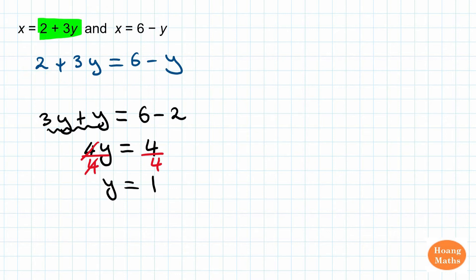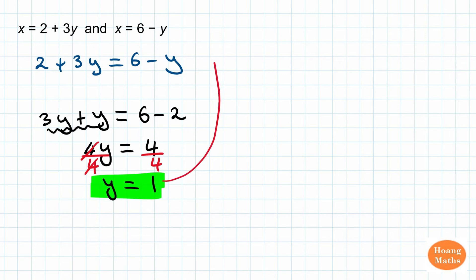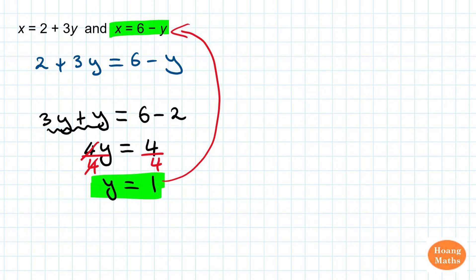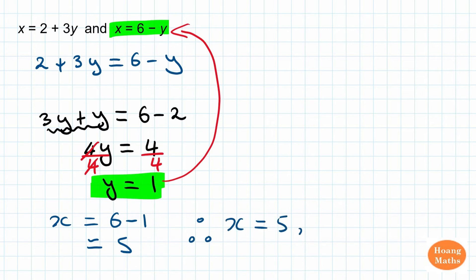So now we have the y value. To find x, substitute y equals 1 into either equation — it doesn't really matter, you get the same answer. So x is equal to 6 minus y. Y is 1, so which is 6 minus 1, which is equal to 5. Therefore, x is equal to 5 and y is equal to 1.